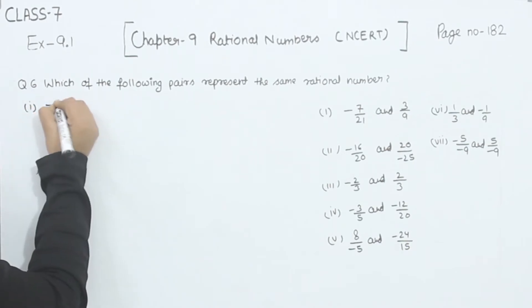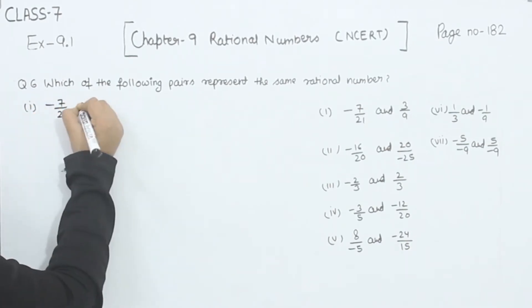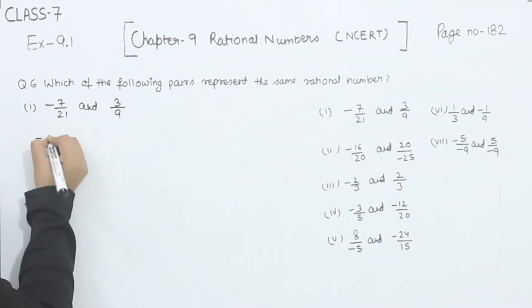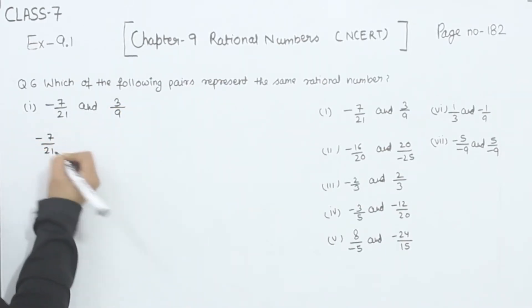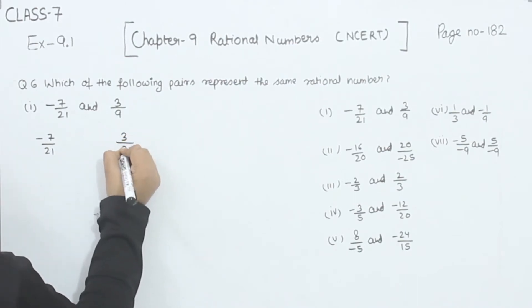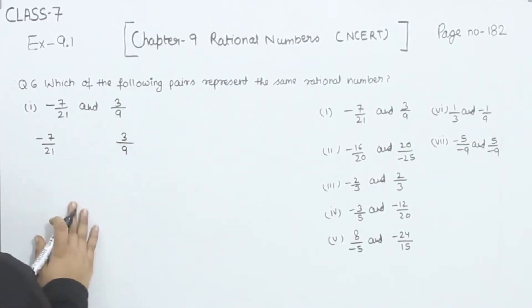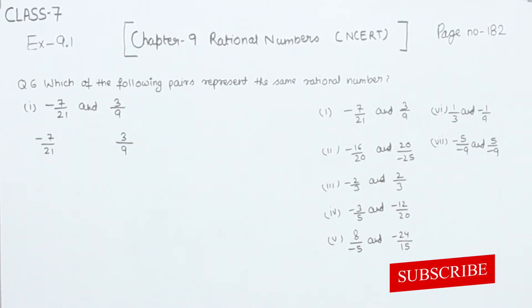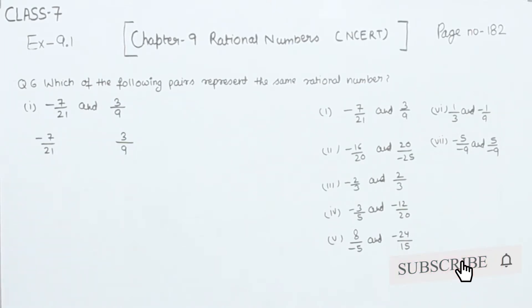In part 1, we have minus 7 by 21 and the second one is 3 by 9. For finding whether they are the same rational numbers or not, we have to take both rational numbers to their simplest form.